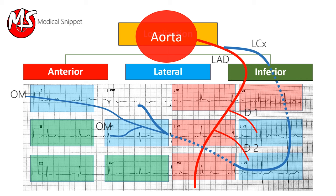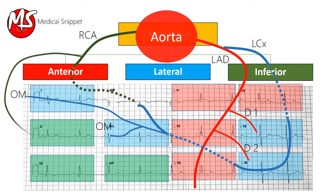Inferior wall myocardial infarction is due to block in the right coronary artery and its posterior descending artery and posterior left ventricular branches in 70% of cases. In 20% of cases, the PDA arises from the RCA and the PLV branch arises from the circumflex — that is co-dominant circulation. In 10% of cases, both PDA and PLV branch arise from the circumflex — that is left dominant circulation.